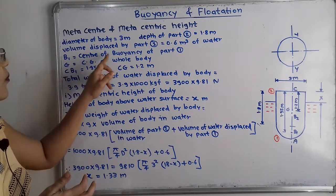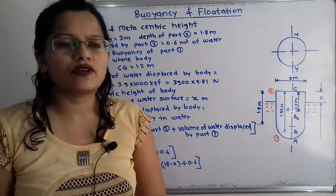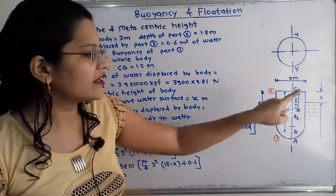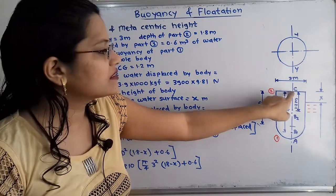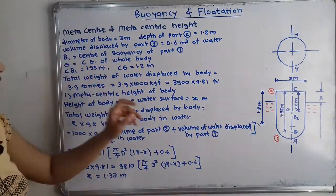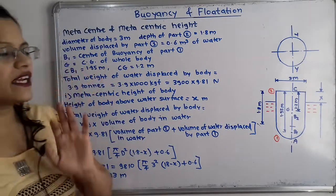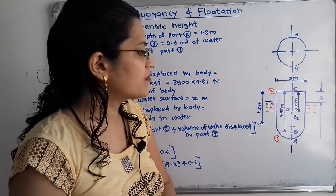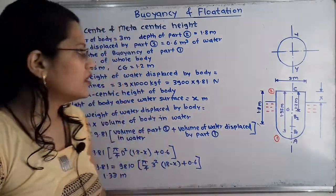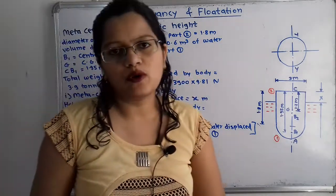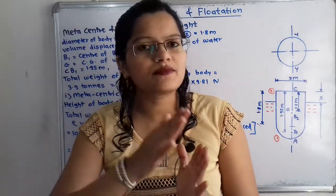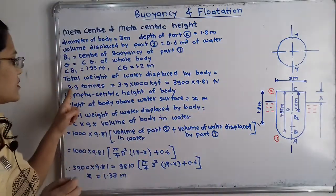The center of buoyancy of part 1 is point B1. The distance from point C (top of cylinder) to B1 is 1.95 meter, shown in the diagram. G is the center of gravity of the whole body, and the distance CG is equal to 1.2 meter. The total weight of water displaced by the body is 3.9 tons.